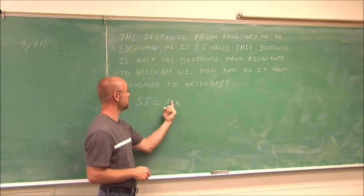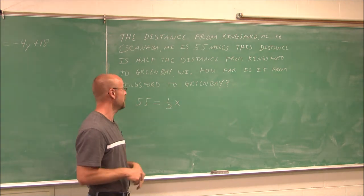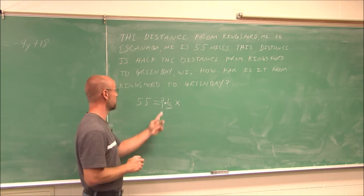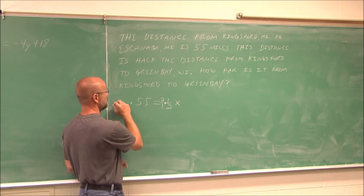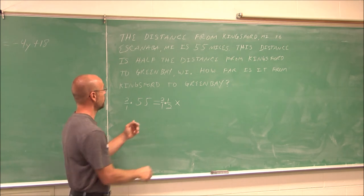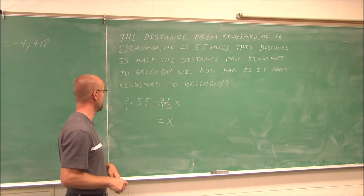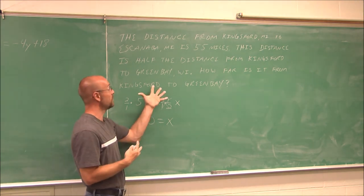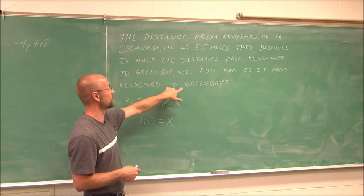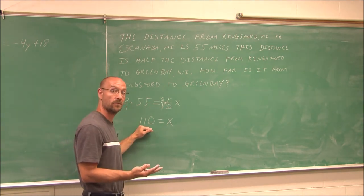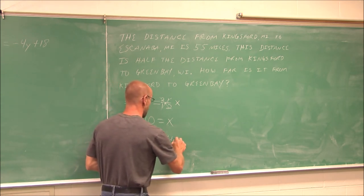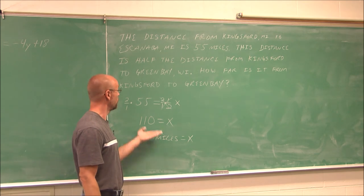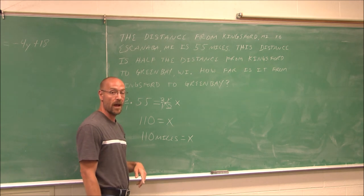To solve this equation, I want to undo the multiplication by the fraction. I multiply both sides by its reciprocal — 2 over 1, which is just 2. This reduces to 1x on the left, and 2 times 55 is 110 on the right. Rereading the problem: how far is it from Kingsford to Green Bay? It is 110 miles — always remember your units. So it's 110 miles from Kingsford, Michigan to Green Bay, Wisconsin. Don't forget those units when working with application problems.